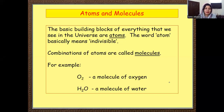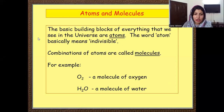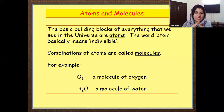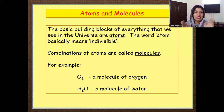The next thing is about molecules. So what are molecules? When atoms combine together, they make a molecule, like the oxygen molecule. When hydrogen and oxygen combine with each other, they make the water molecule. So an atom is a single thing and a molecule is a combination of atoms.